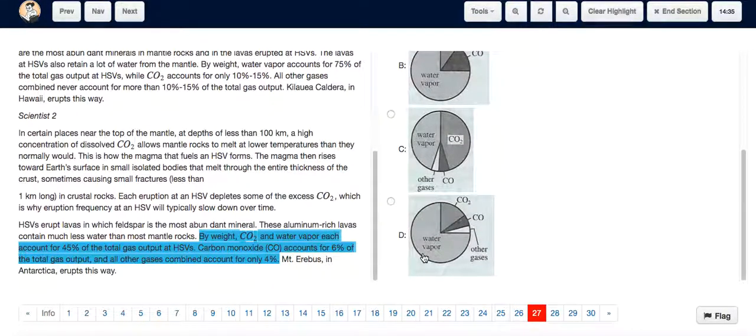Now it's not D because in D, water vapor is occupying three-fourths of the pie, which is 75%. Whereas in C, water vapor and CO2 are occupying an equal percentage of the pie, which is about 45%, and carbon monoxide and other gases are also appropriately represented. So the answer is C.